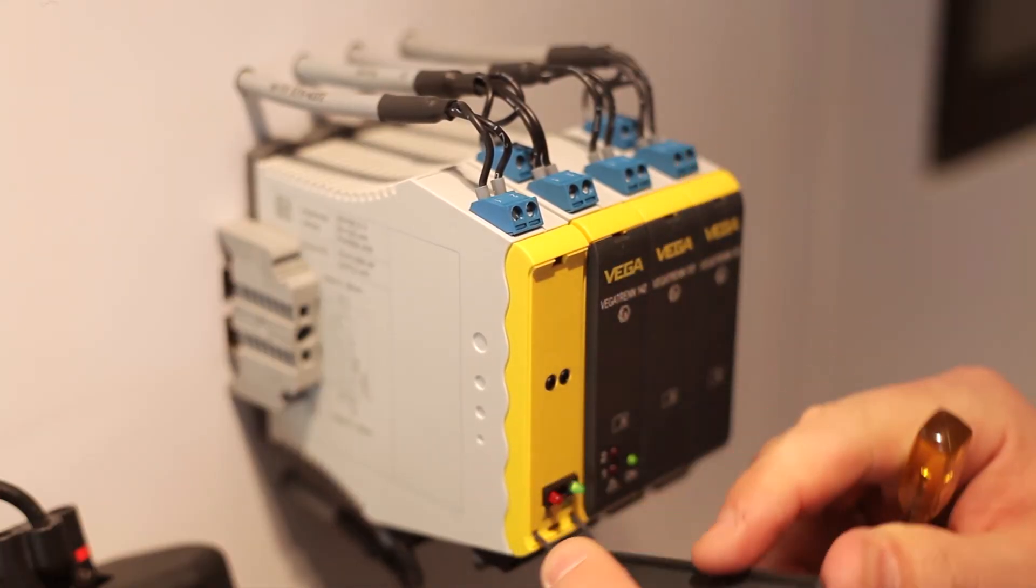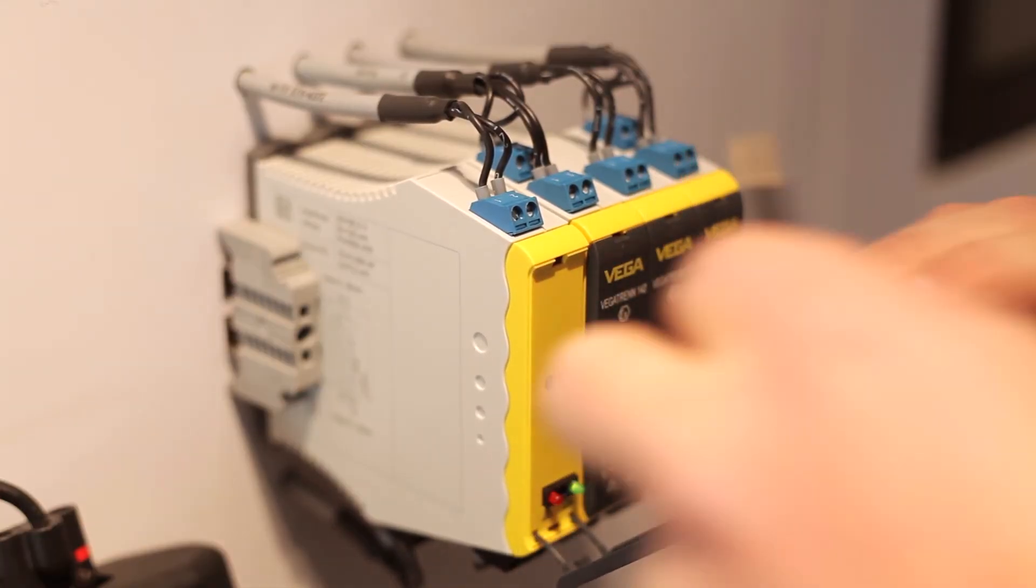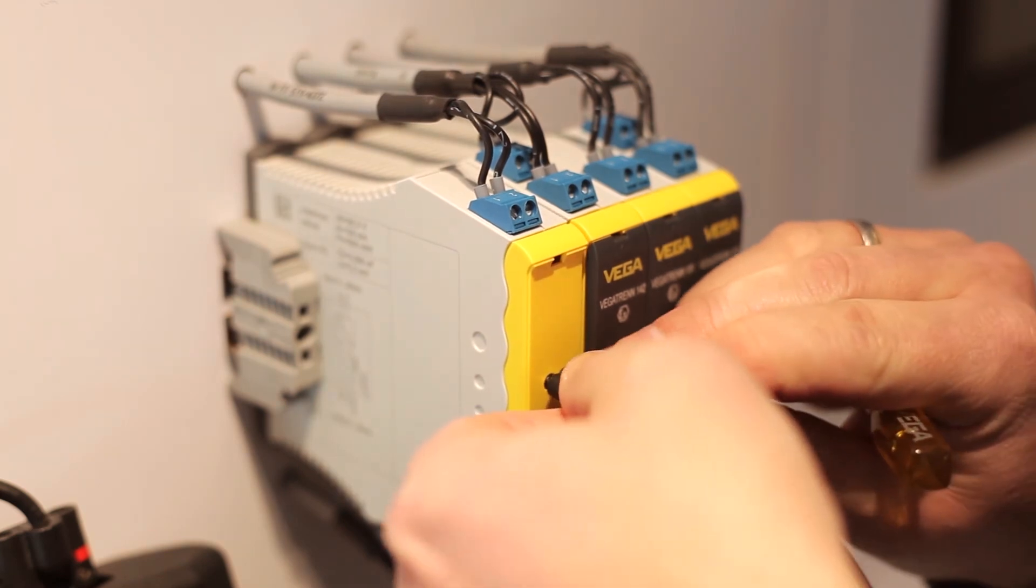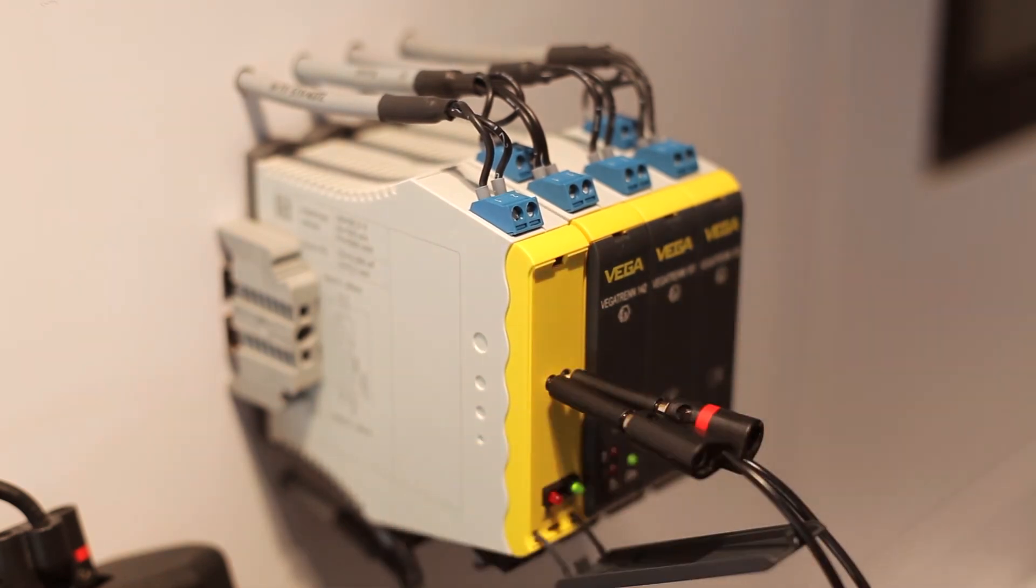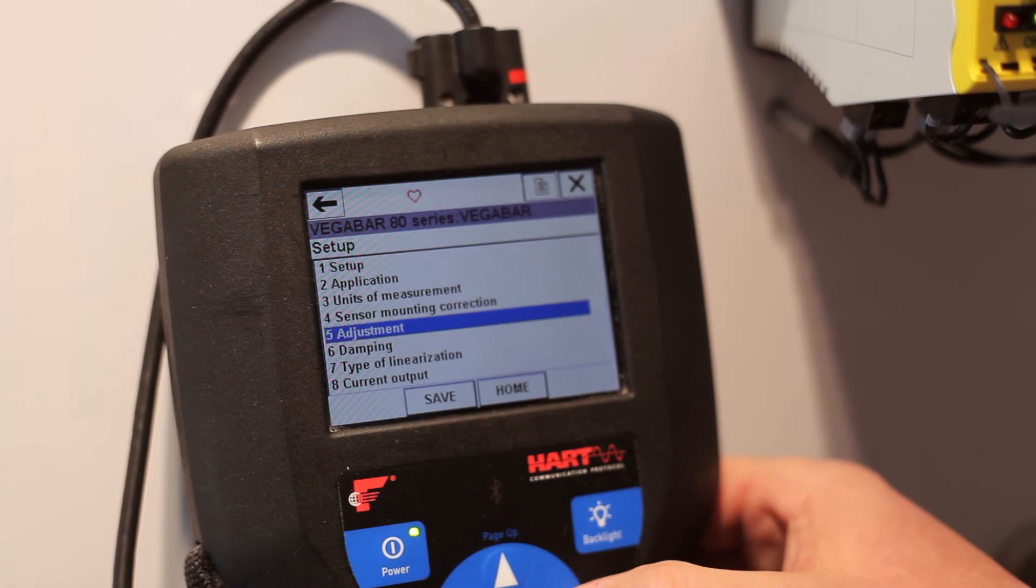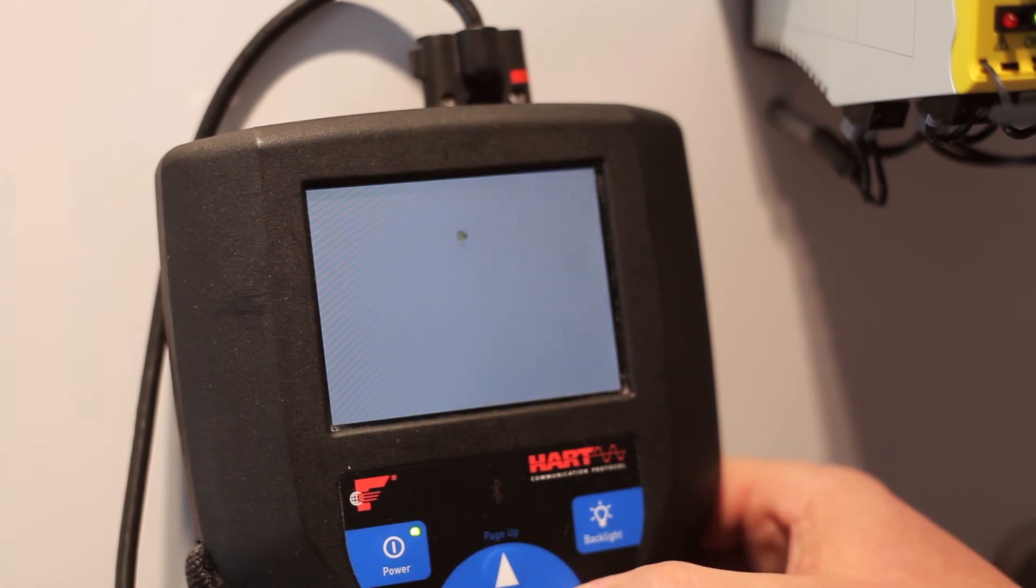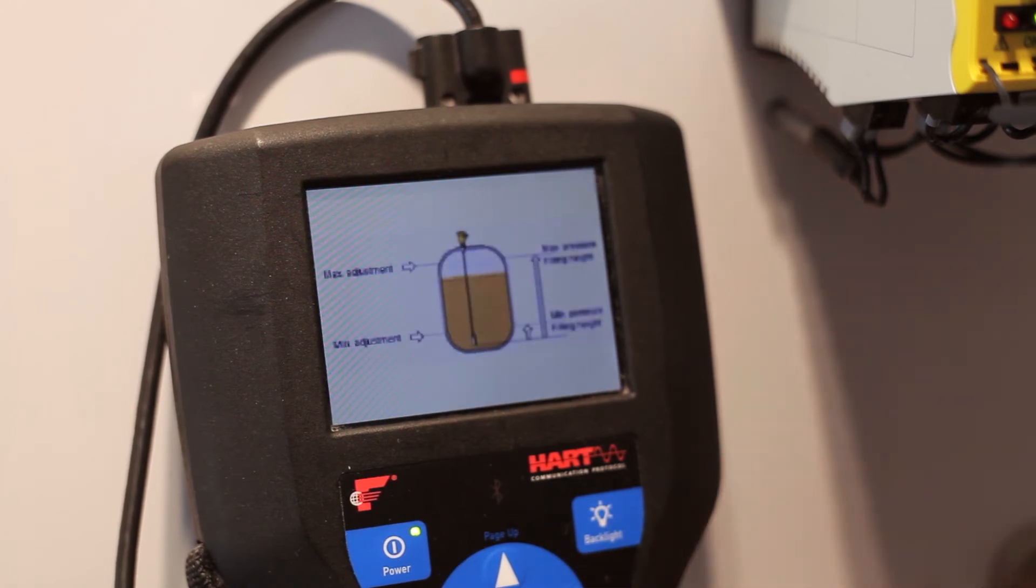This is much easier with the Vega Tren separator. The HART communication sockets with integrated HART resistance are located under the front cover. The HART handheld device can be easily connected to these sockets.